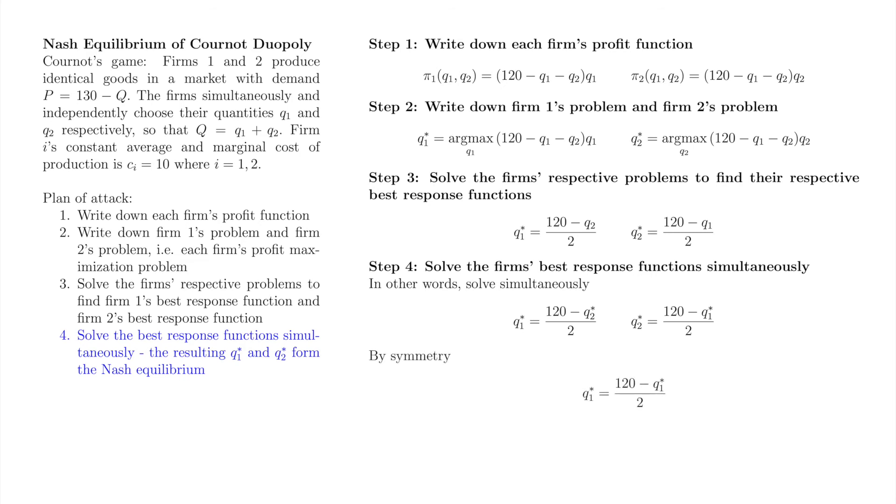We could substitute one best response function into the other and solve, but instead we'll appeal to symmetry one last time. Since the firms have identical cost functions, their Nash equilibrium quantities must be the same, so we can simply replace q2 star with q1 star and solve for q1 star in one of these equations.